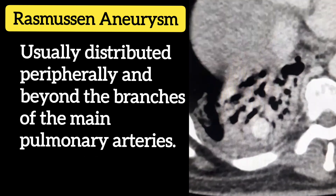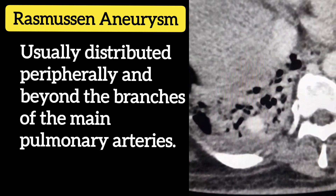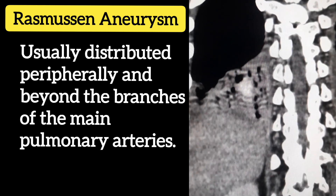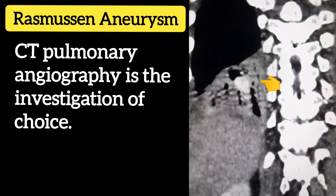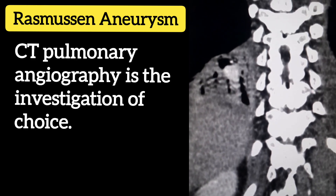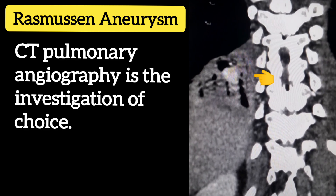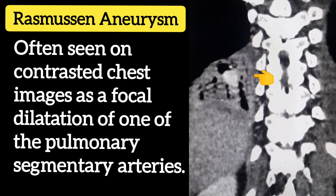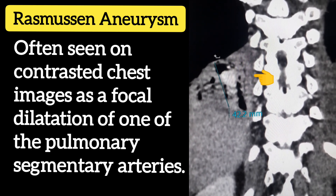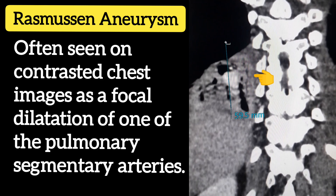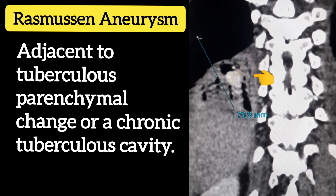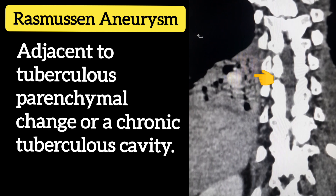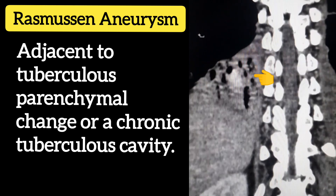Usually distributed peripherally and beyond the branches of the main pulmonary arteries. CT pulmonary angiography is the investigation of choice, often seen on contrasted chest images as a focal dilatation of one of the pulmonary segmental arteries adjacent to tuberculous parenchymal change or a chronic tuberculous cavity.